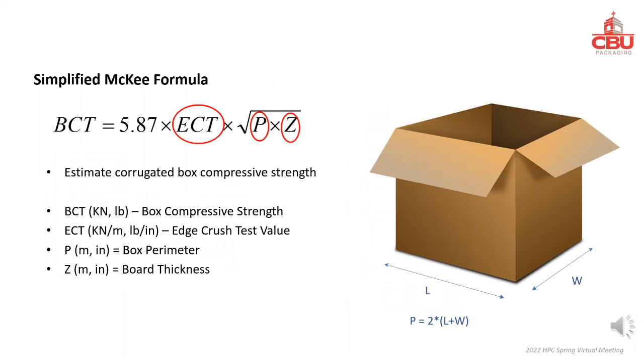In the well-known McKee formula, the following factors are included: ECT, Box Footprint Perimeter, and Board Thickness.